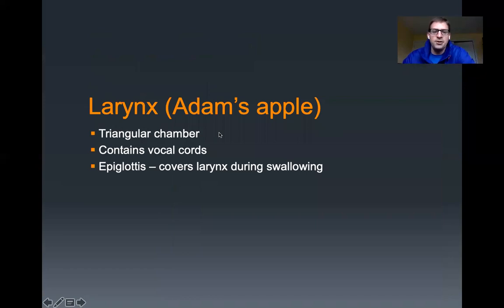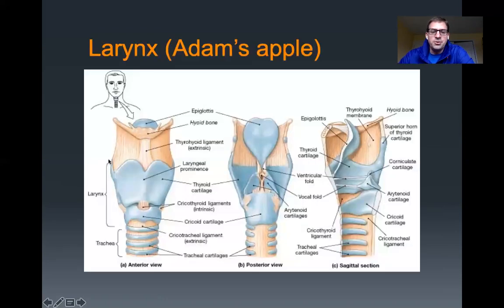Working our way down inferiorly, the next structure is the larynx, commonly called the Adam's apple. It is a triangular chamber that contains your vocal cords or vocal folds, and it also has the epiglottis attached to it that covers the larynx during swallowing. The larynx is made up of the thyroid cartilage, which is just deep to the thyroid gland, and then the cricoid cartilage — two separate pieces of cartilage. The thyroid cartilage does not wrap all the way around the back of the larynx; however, the cricoid cartilage does.